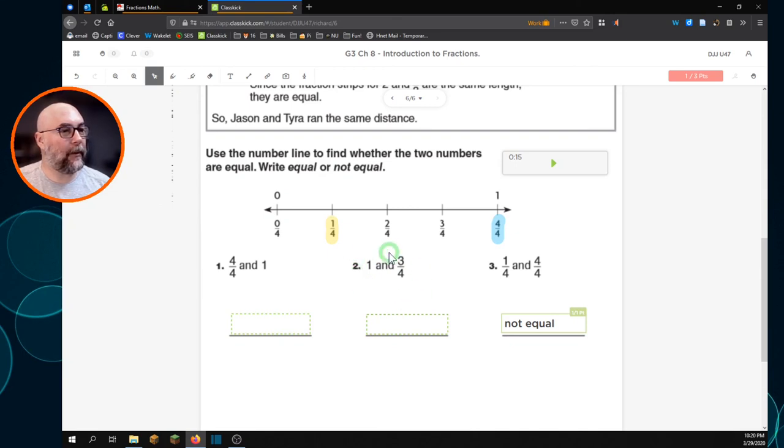You can do this one, which is number 2. Are 1 and 3 quarters equal. And number 1, are 4 and 1 equal. Good luck. See you soon.